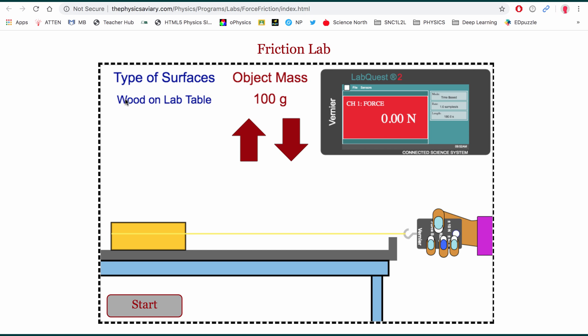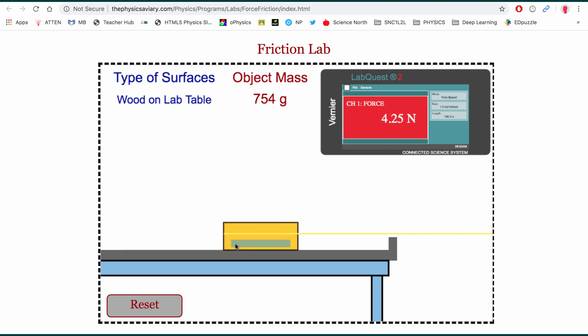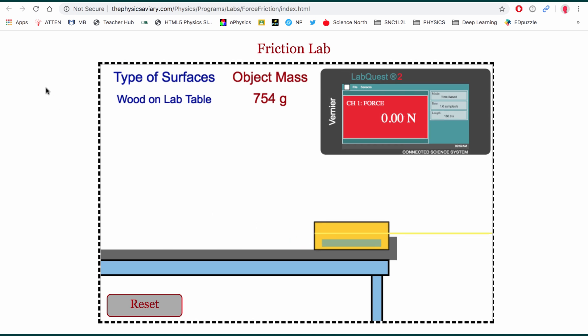So the next part of the lab is going to be doing the wood on tabletop again, but instead of being 100 grams I want to change the mass. So I'm going to make it in the neighborhood of 700 to 800 grams. Now the only problem with this interactive is that sometimes when you're going up and down with the arrows they will not give you the same mass again. So I'm going to go with 754 wood on lab table. I'm going to click start. And we watch the force sensor.